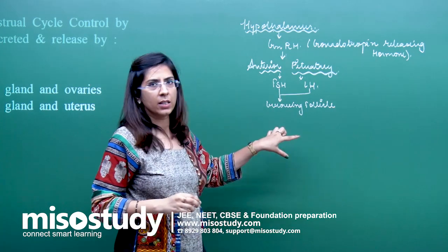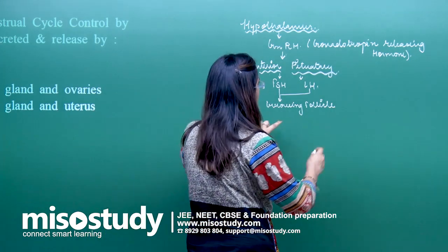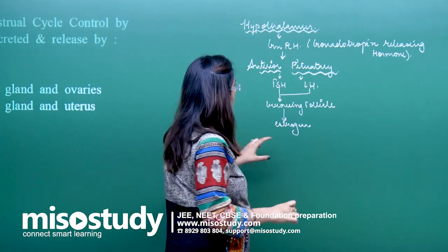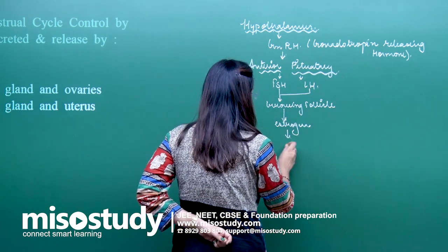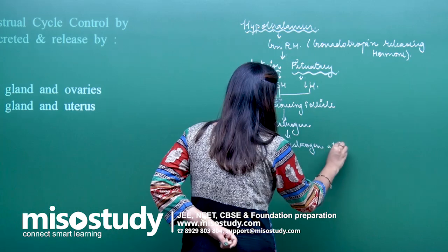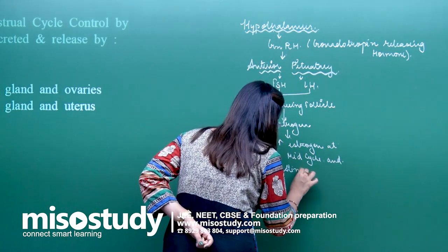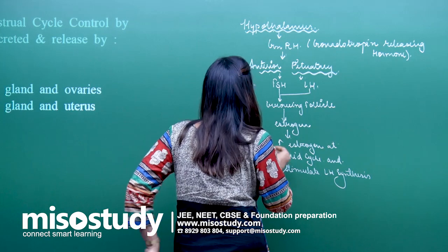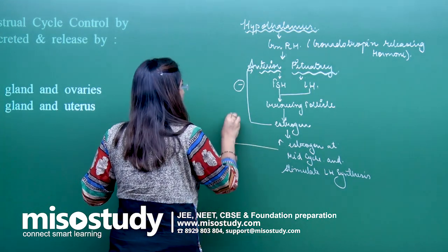These growing follicles — meaning I am talking about the ovaries — in the ovaries the growing follicles are there, and these growing follicles secrete the hormone estrogen. This estrogen stimulates LH production. It increases estrogen at mid-cycle and stimulates LH synthesis. This estrogen also has a negative impact on the anterior pituitary, while simultaneously the increasing estrogen has a positive impact as well.